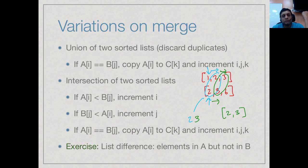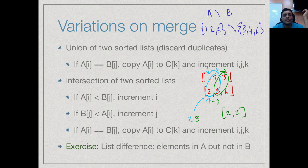As an exercise, try implementing list difference. Set difference A−B returns elements in A but not in B. For example, {1,2,3} − {3,4,6} = {1,2}. Try adapting the merge procedure — as we did for union and intersection — to implement list difference.